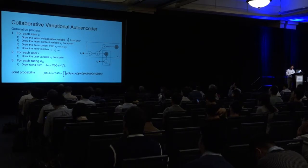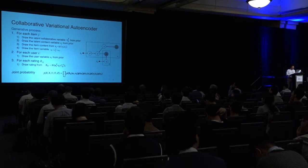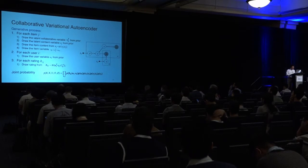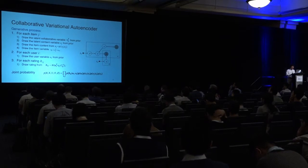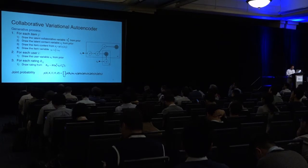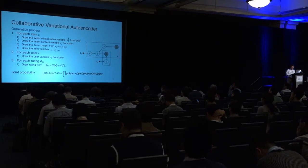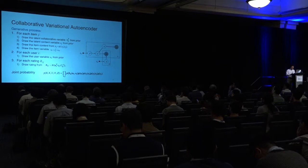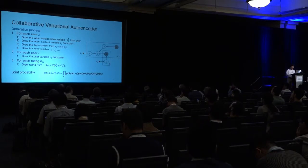If you look at the graphical model, it is actually a very simple graphical model — it only has six nodes. What makes it non-trivial is that it is powered by a deep neural network, which is shown in the Z-to-X generation path.